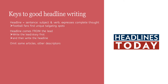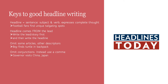In a headline, you're going to omit some articles — those little words 'a,' 'an,' and 'the' — and maybe some other descriptors. For example: 'Boy finds turtle in backpack.' A full sentence would say 'A boy finds a turtle in his backpack,' but you can leave those articles out in the headline. You can also omit conjunctions and instead use a comma: 'Governor visits China, Japan.'